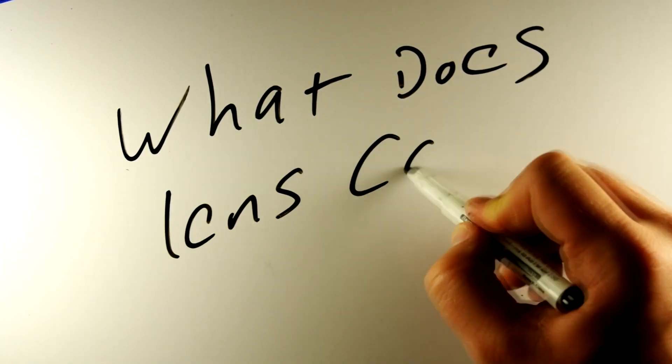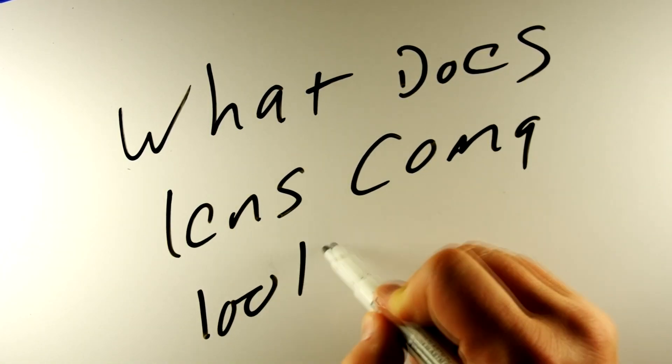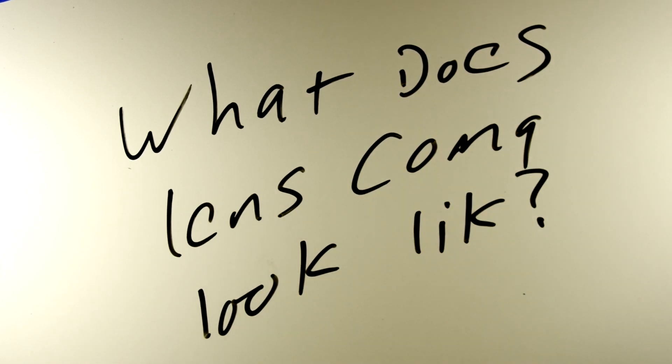Coma is a type of lens aberration. And what that means is that it's a fault of the lens in the way that it transmits light. Now, no lens is perfect. Every lens that you get is going to have some kind of flaw somewhere.